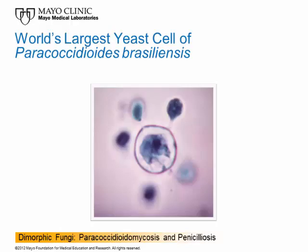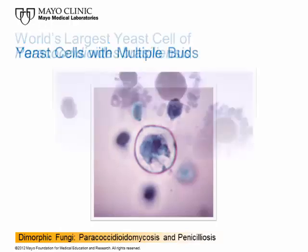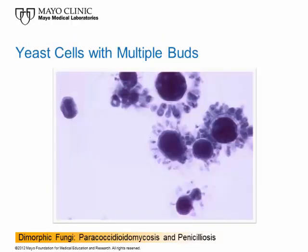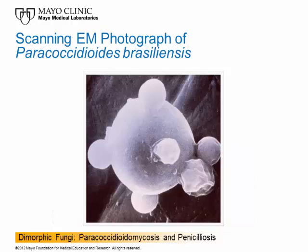Here is another example showing all the yeast cells coming off all the way around the central yeast cell itself. This is a scanning electron micrograph showing what it really looks like — at high power, the buds do come off all the way around in three dimensions.